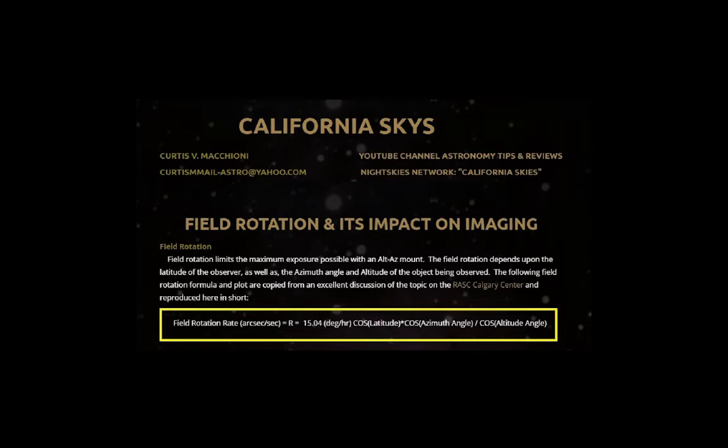The field rotation rate, in arc seconds per second, is about 15 degrees per hour times the cosine of the latitude times the cosine of the azimuth angle, divided by the cosine of the altitude angle. So we're looking at 15 degrees per hour if all the other terms are essentially 1.